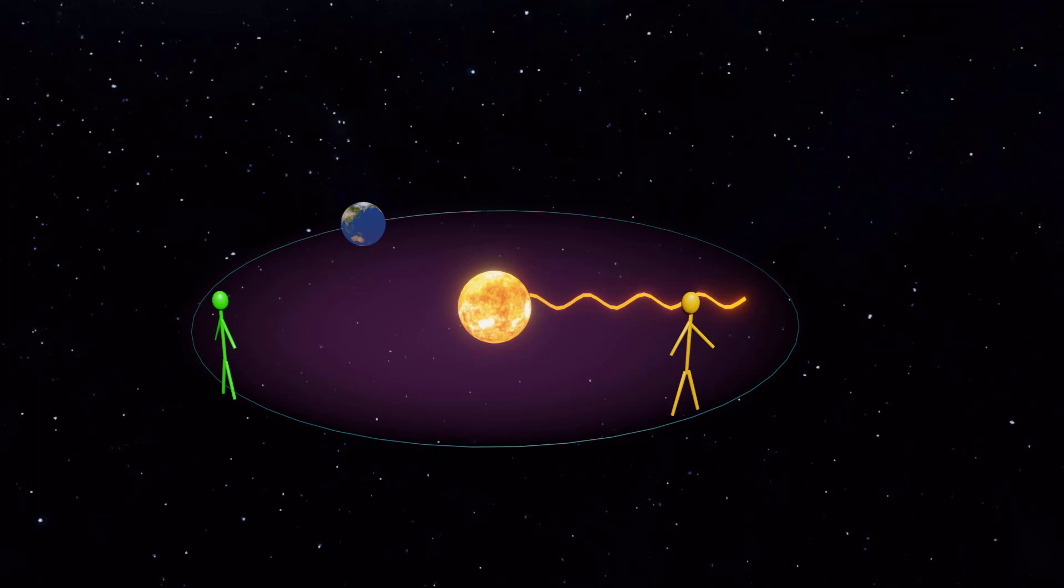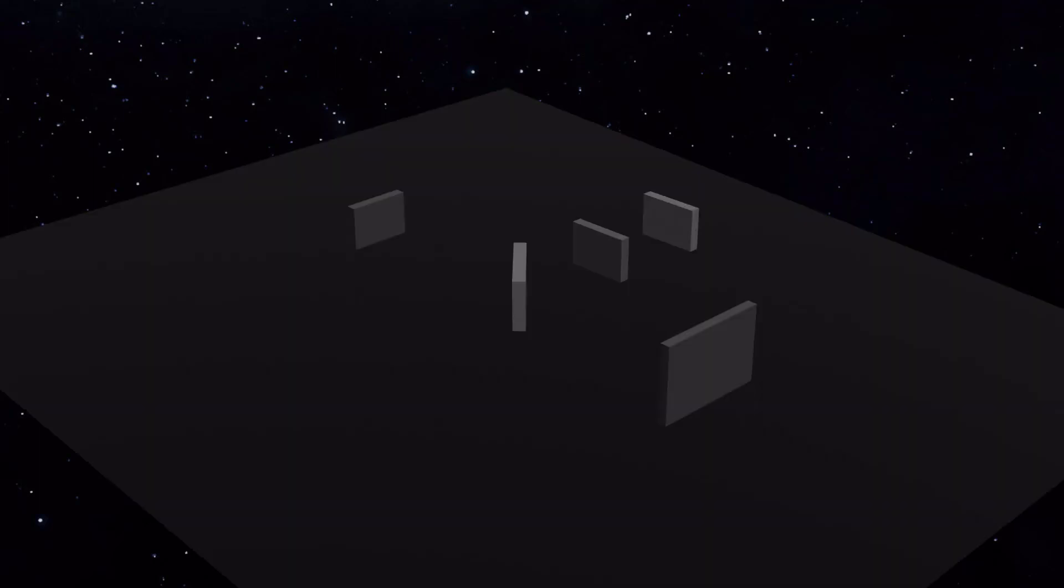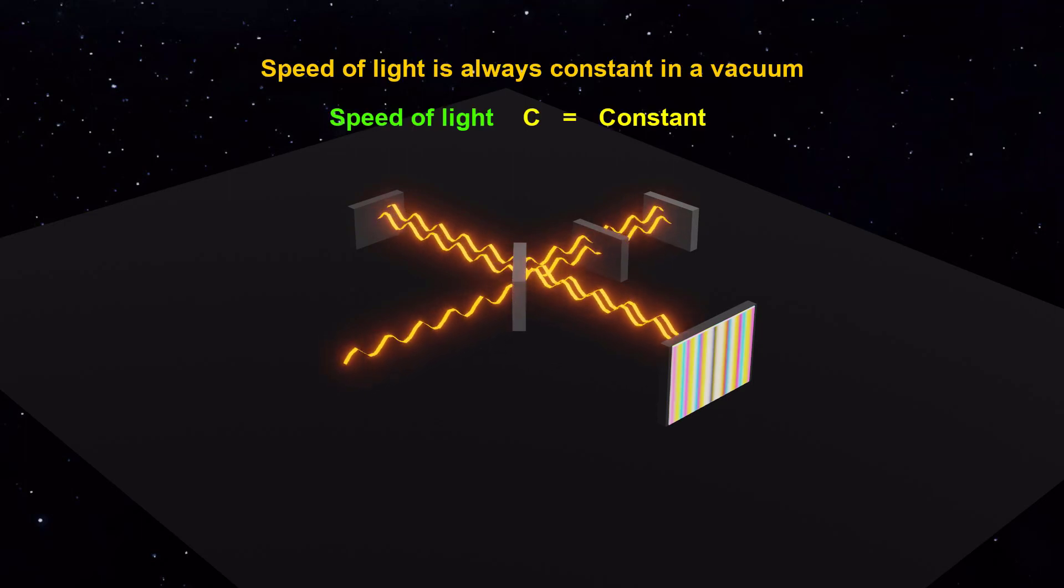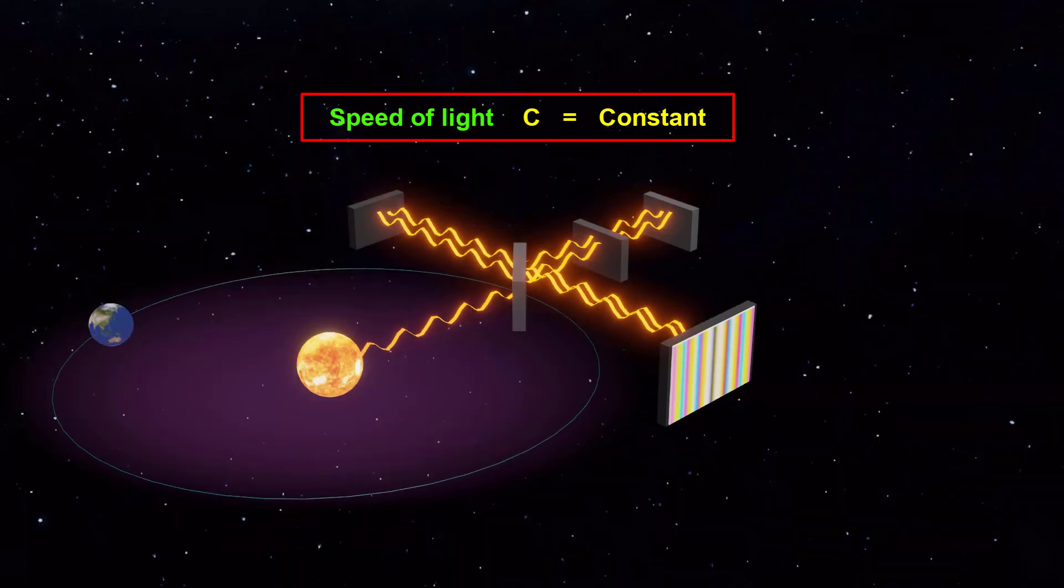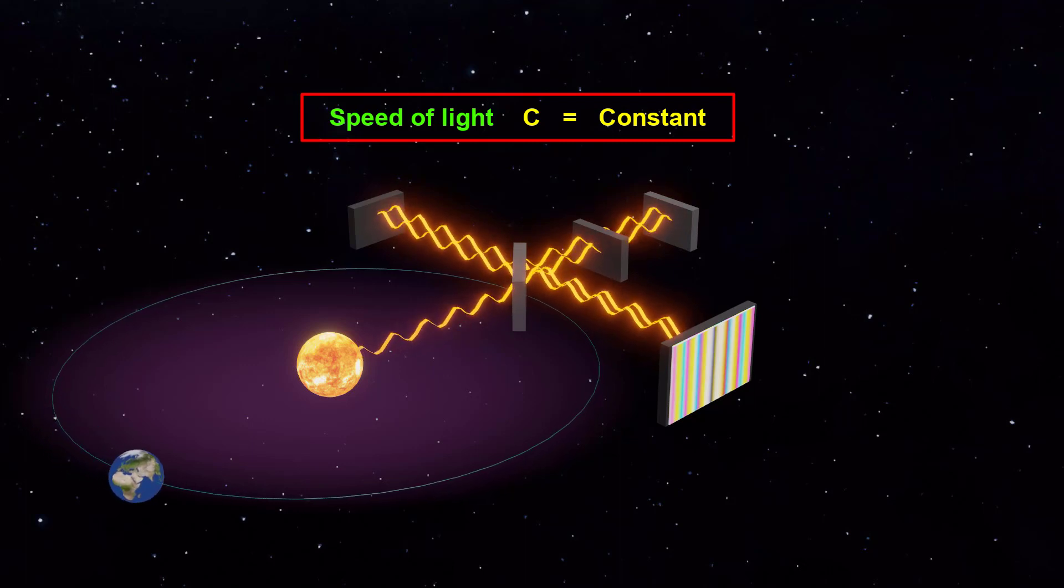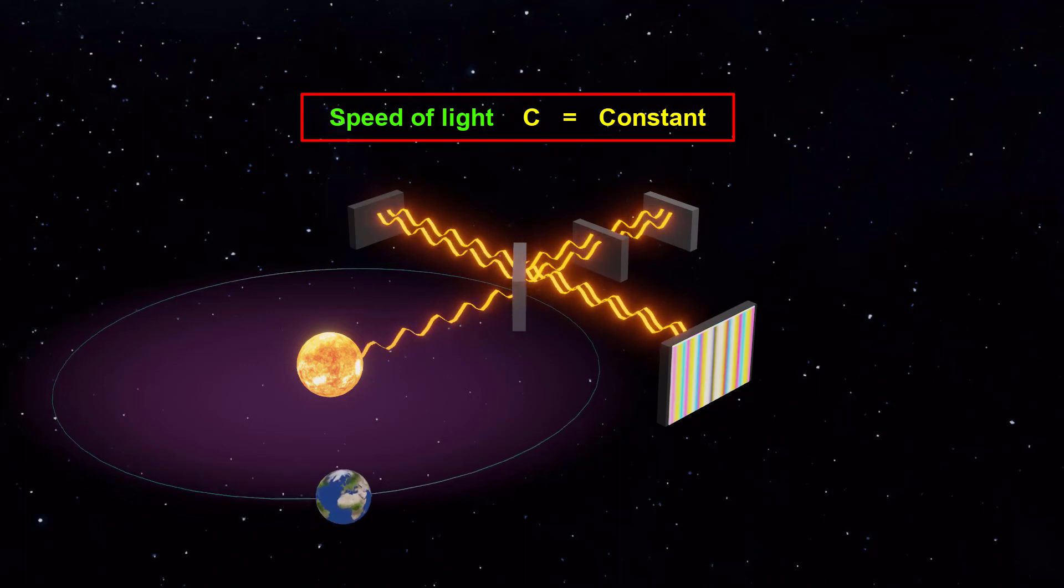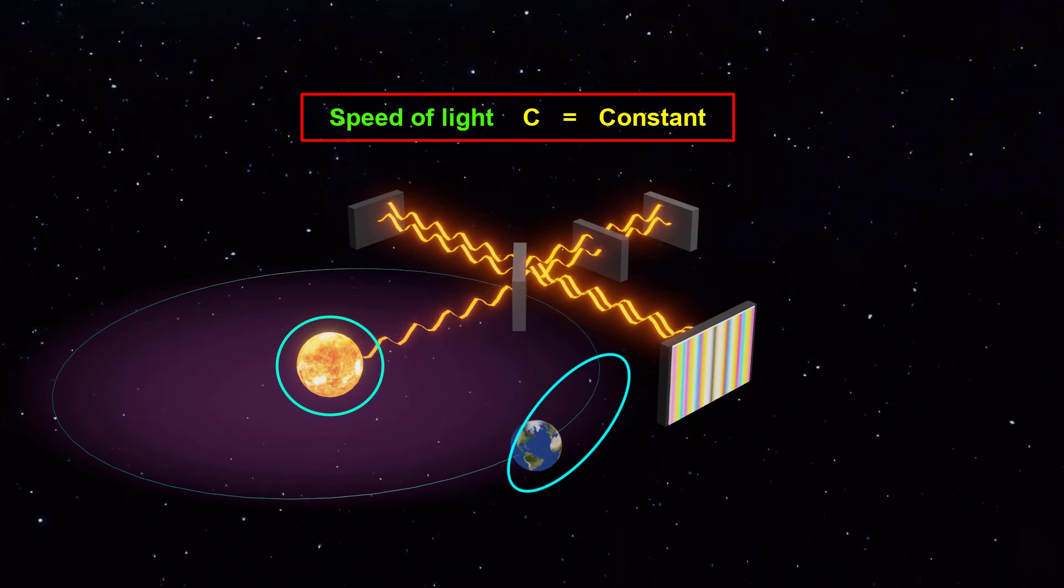It was thought that the speed of light would vary for observers moving at different speeds through the ether. However, the Michelson-Morley experiment in 1887 demonstrated that the speed of light remains constant for all observers regardless of their motion. This result led Einstein to conclude that the speed of light is an absolute constant in a vacuum regardless of the motion of the source or observer.